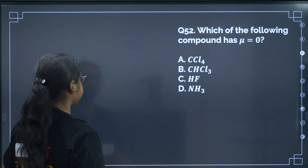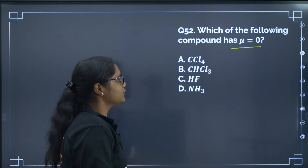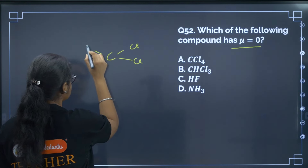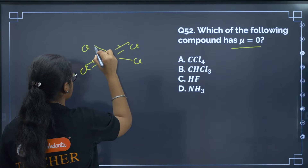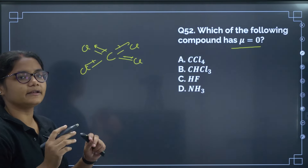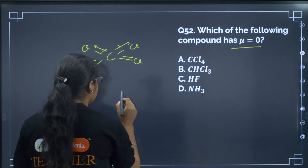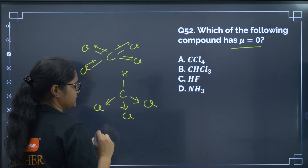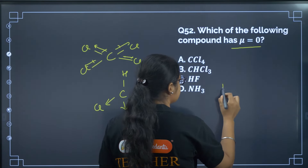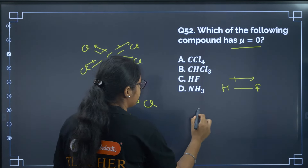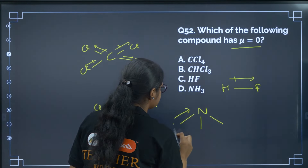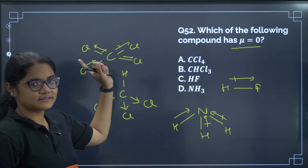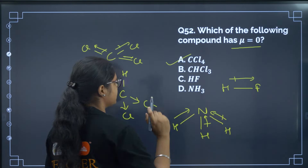Question 52: Which compound has a magnetic moment (dipole moment) equal to zero? CCl4 is a square planar/tetrahedral structure where dipole moments are in opposite directions and cancel each other, giving net dipole moment = 0. CHCl3 dipoles don't cancel; HF dipole is towards fluorine; NH3 dipoles point towards nitrogen and don't cancel. So the correct answer is option A, CCl4.